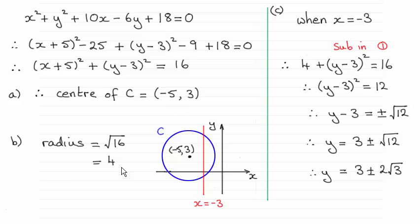You also had to find the radius in part B which was 4 and then you had to give the exact values of the y-coordinates in surd form where the line x equals minus 3 crossed the circle and it turned out that y equals 3 plus or minus 2 root 3.